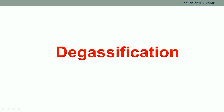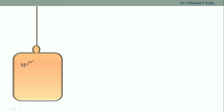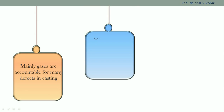Welcome. In this video we are going to discuss about degasification in the casting process. We know mainly gases are accountable for many defects in the casting process. Elements like hydrogen, nitrogen, carbon and oxygen are responsible for these. These elements are dissolved in molten metal.